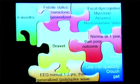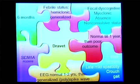The EEG is normal in the first one to two years, but then generalised poly-spike wave is seen, and often multifocal abnormalities. In this syndrome, the genes really make the final diagnosis.